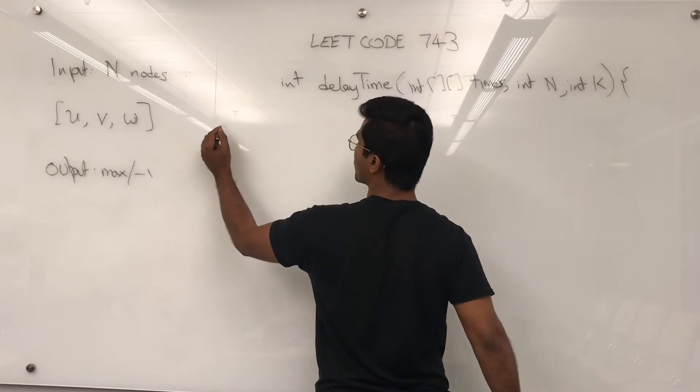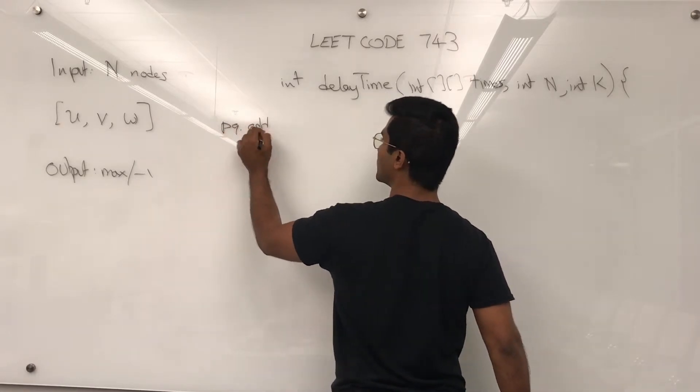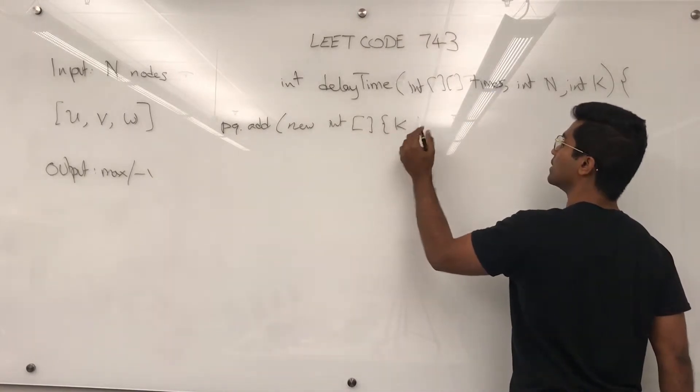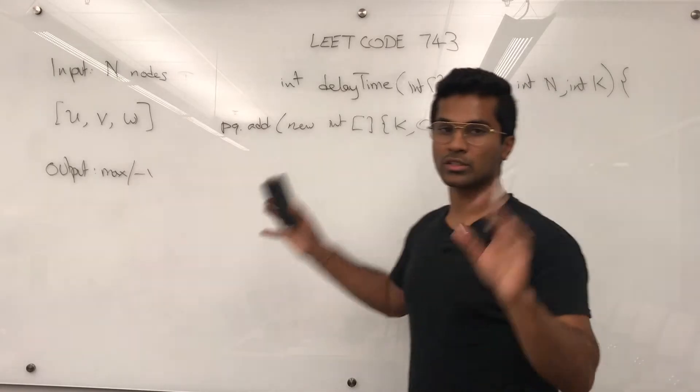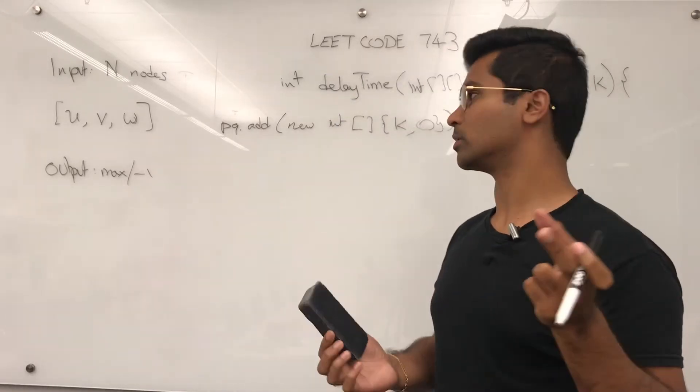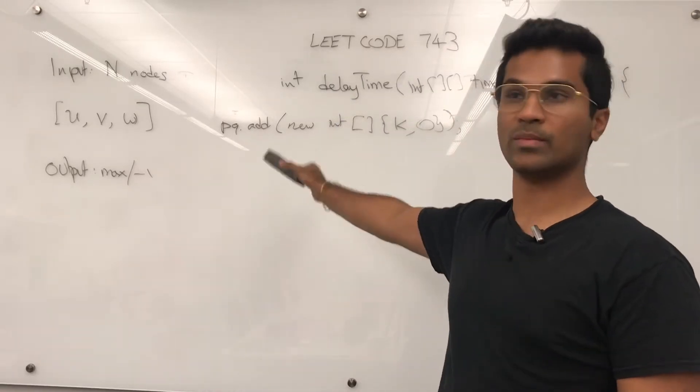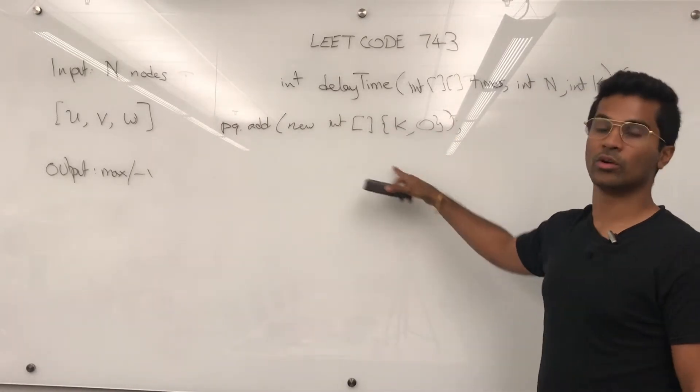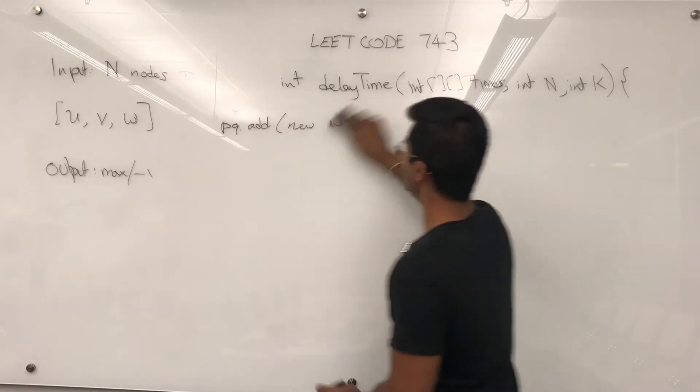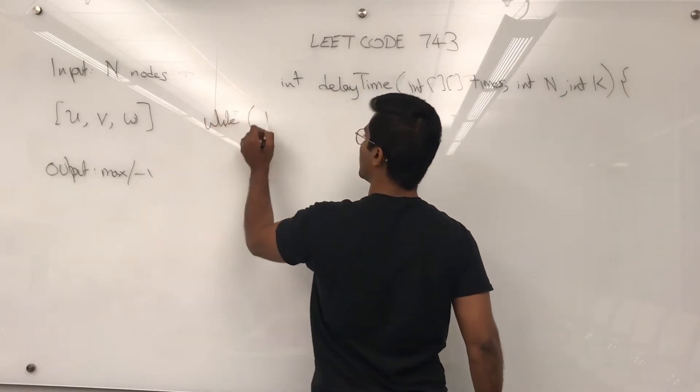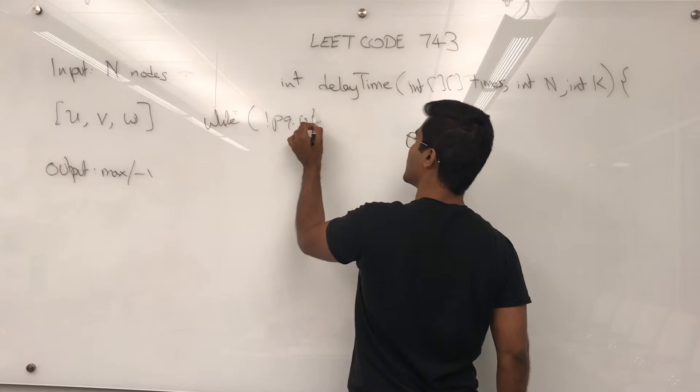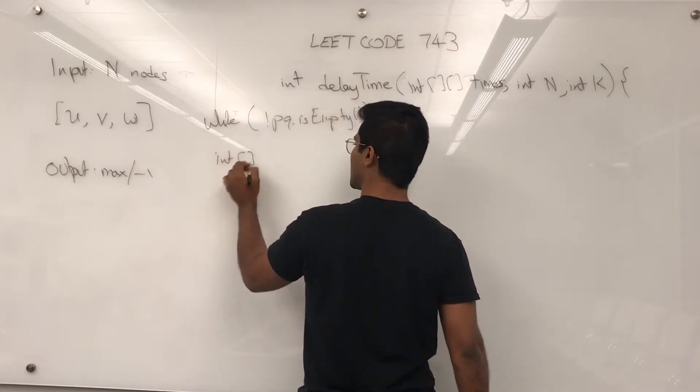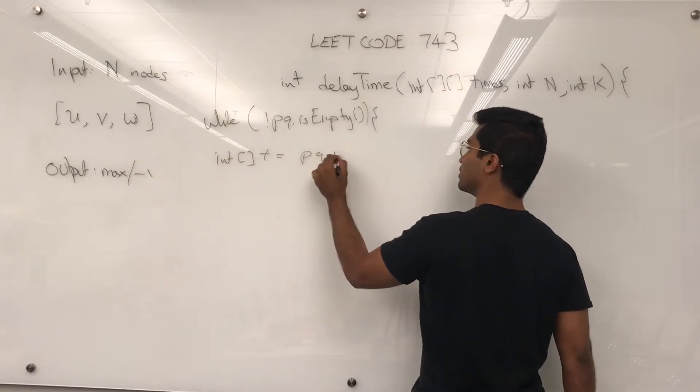So, first we're going to offer, we're going to add new int k, 0. I changed some of the syntax a little bit from the LeetCode solution tab because this is more intuitive and it makes sense to me. k is the node and 0 is the distance. k is going to be 0 away from itself. Now, while pq isn't empty, what we're going to do is pull each time t for temp. Let's say p, we pulled it.